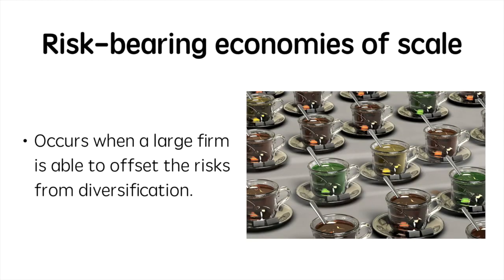Risk-bearing economies of scale occur when a large firm is able to offset the risks from diversification easier than a small firm. If you consider the example in the picture, a tea producer that offers many different types of teas can absorb the losses from one of its products because it can offset these losses with higher profits from a better-selling product.